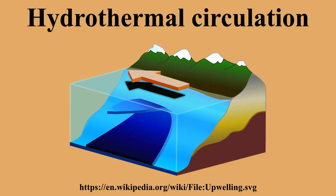Deep crust hydrothermal circulation also refers to the transport and circulation of water within the deep crust, in general from areas of hot rocks to areas of cooler rocks. The causes for this convection can be intrusion of magma into the crust, radioactive heat generated by cooled masses of granite, heat from the mantle, and hydraulic head from mountain ranges.